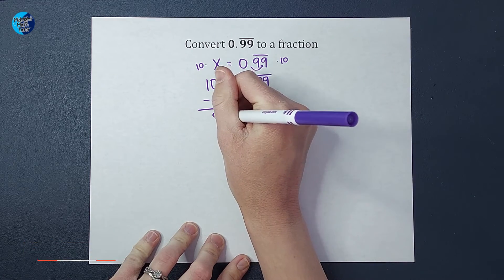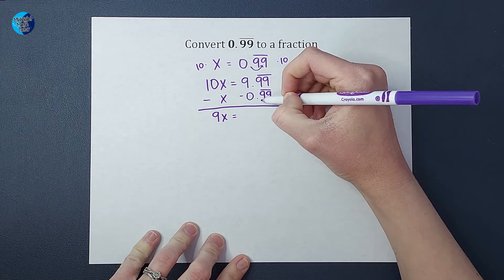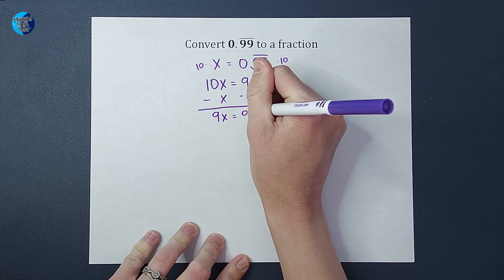When I subtract that, I end up with 9X over here equals, well, guess what? Those repeating 9s cancel out and I end up with just 9 over here.